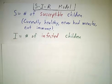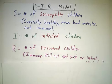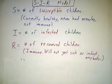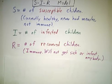Then I is the number of infected kids, the ones that already have measles. And finally, R is the number of kids that have recovered from the disease. Then they're immune, they won't get it anymore, and they're not going to get anybody else sick.